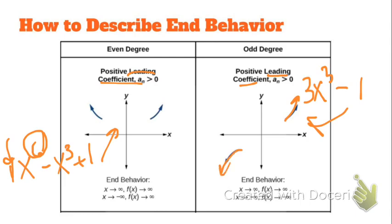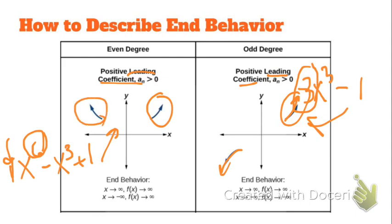Two things that tell you end behavior are the leading coefficient and the degree. First thing you do is look at the leading coefficient. If it's positive, it's always going to rise to the right. Both of these examples have positive leading coefficients. And if the degree is even, it's going to go in the same direction on the left. If it's odd, it's going in the opposite direction on the left.